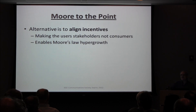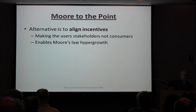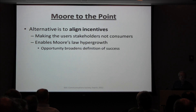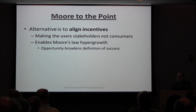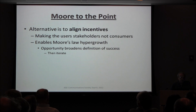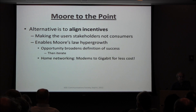Reliability turns out to be a non-issue once you get to a minimal threshold — you can program around things. Because we're looking for opportunity, we can choose any kind of success. We're not limited to one kind of success, which really helps Moore's Law. And then you just iterate.